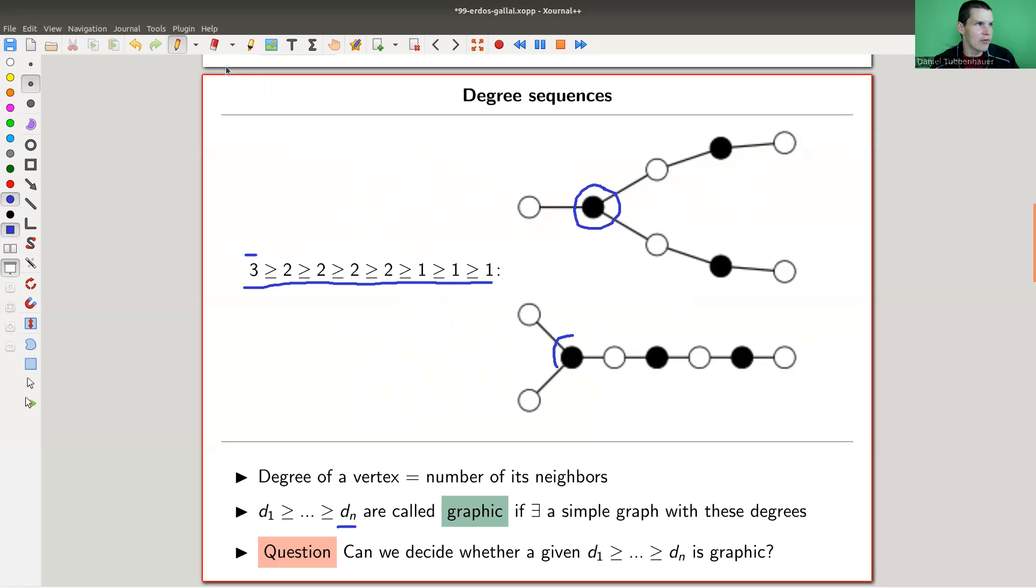So those two graphs have the same degree sequence, the one on the right hand side. Why? Because this graph has three neighbors. So we write three. So this graph, well, let me do the first one first. Those guys have all two neighbors. So we write four times two. And this guy, this guy, this guy, they only have one neighbor. So I write three times one.